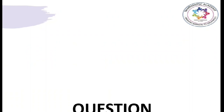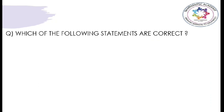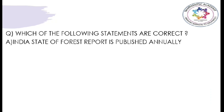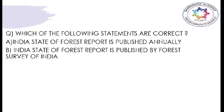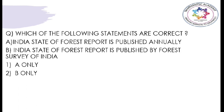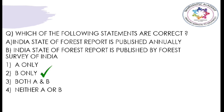Now, since we have studied so much, let us solve a question. The question reads: which of the following statements are correct? Statement A says the India State of Forest Report is published annually. Statement B says the India State of Forest Report is published by the Forest Survey of India. The options are: option 1 — statement A is correct; option 2 — statement B is correct; option 3 — both statements are correct; option 4 — neither of the statements is correct. The correct answer is option 2, only statement B is correct. Statement A is wrong because the India State of Forest Report is published biennially — that is, every two years — not annually.